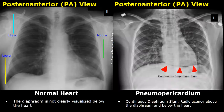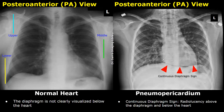Here is another case of pneumopericardium in which a continuous diaphragm sign is seen. This happens when air is present within the pericardium above the diaphragm and below the heart. Normally the diaphragm is not clearly seen below the heart, but here it looks like a continuous diaphragm due to the presence of air within the pericardium.